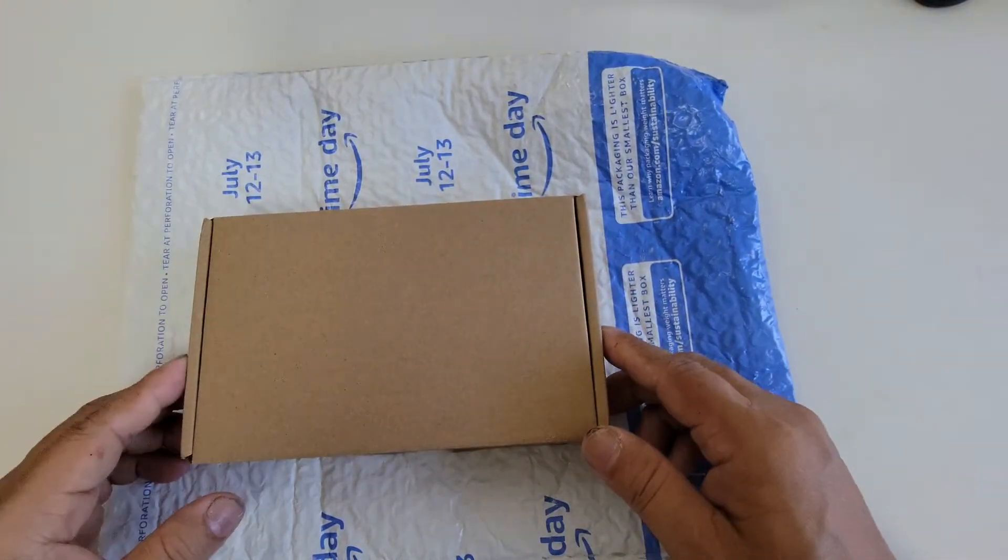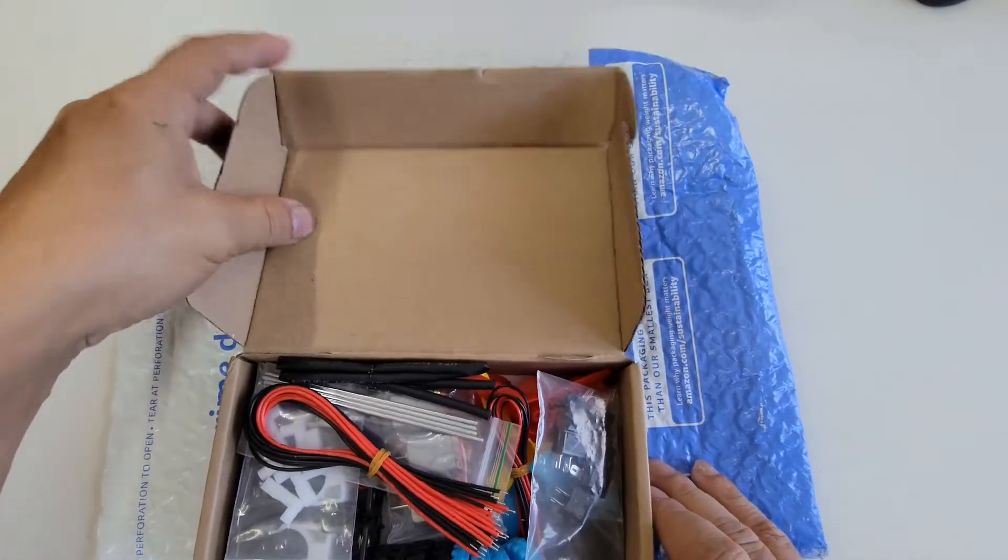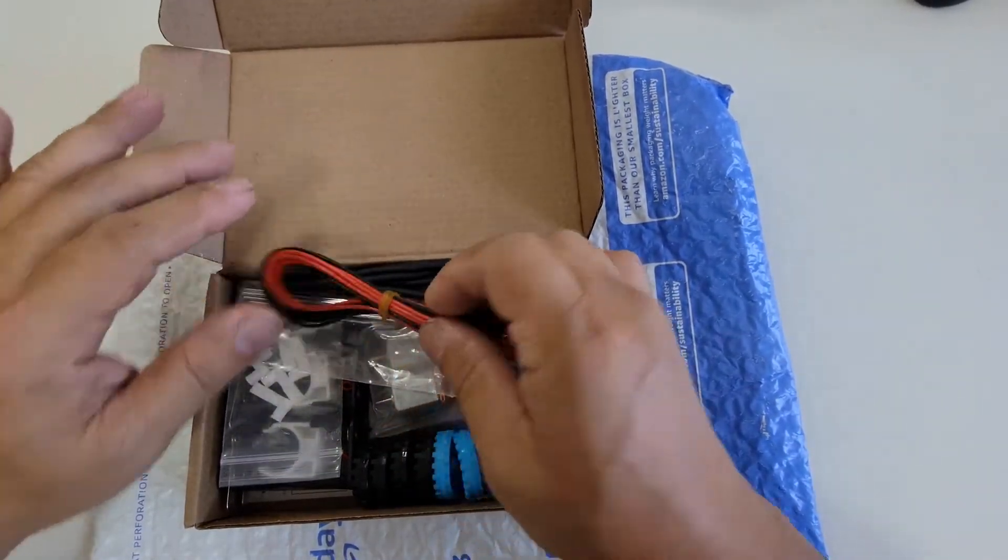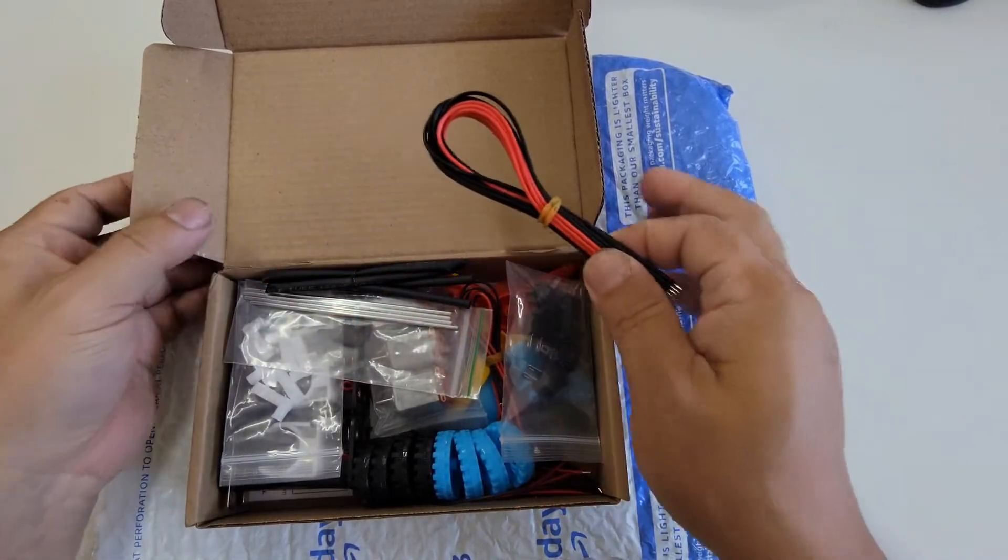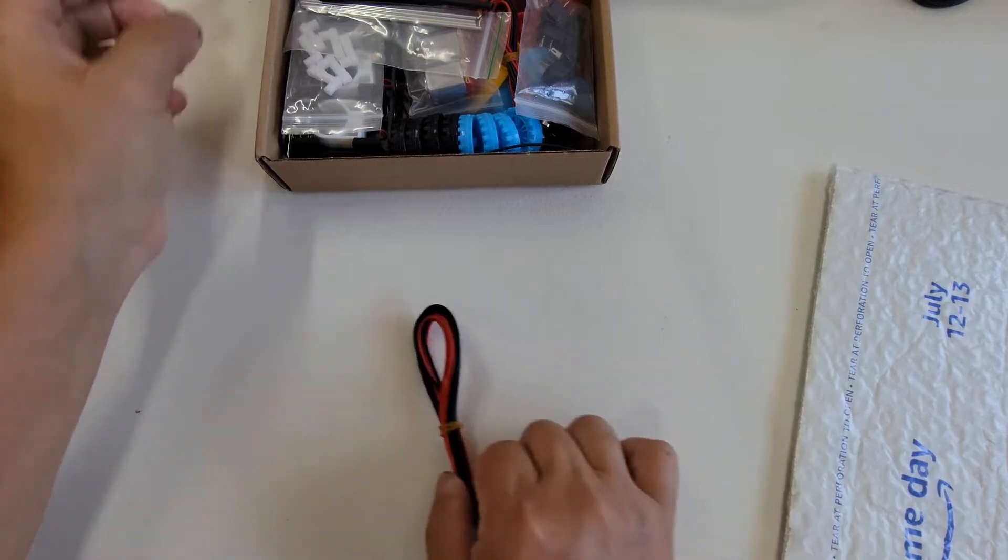And inside this brown box are a couple of items. And as you can see, there's a bunch of wires here.